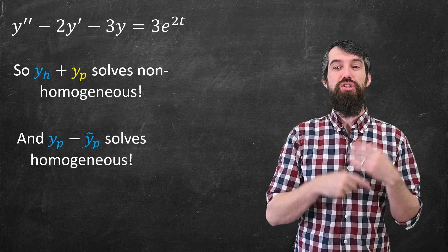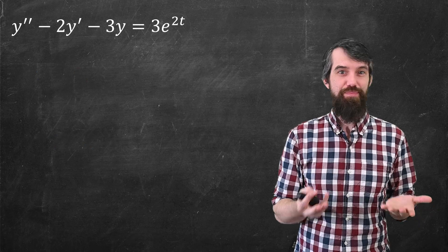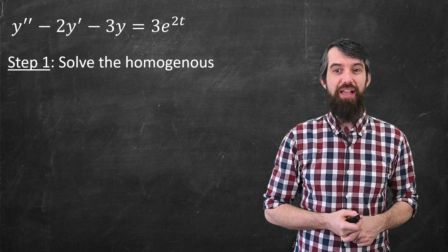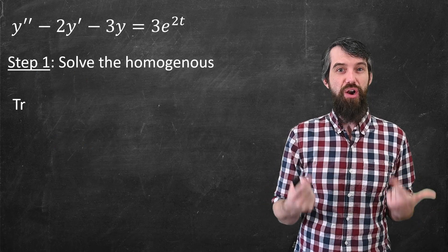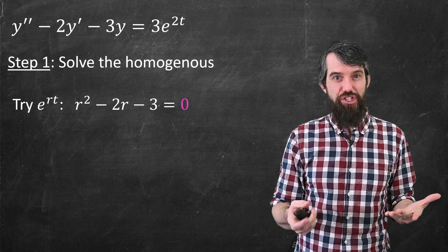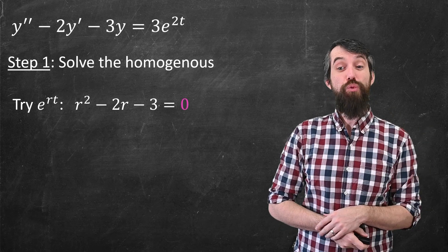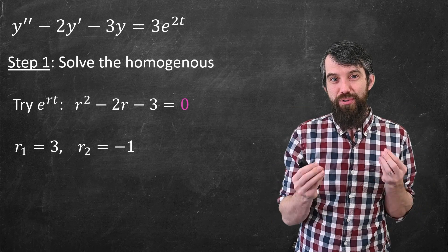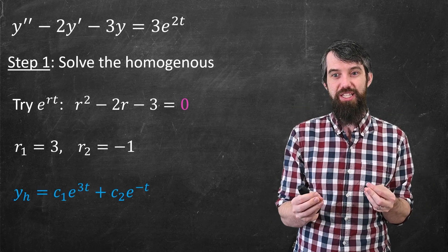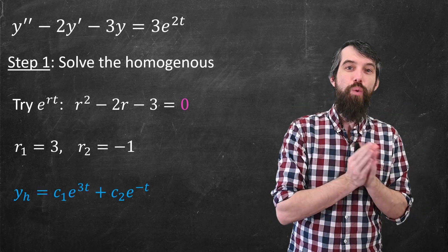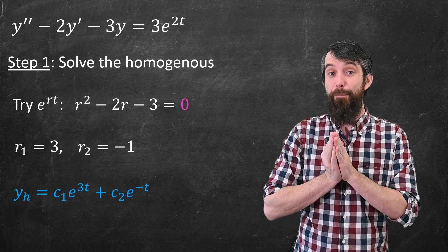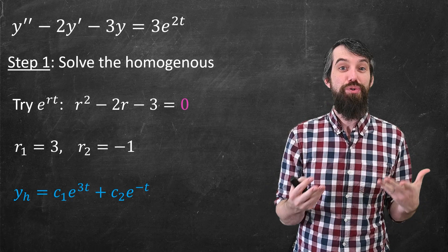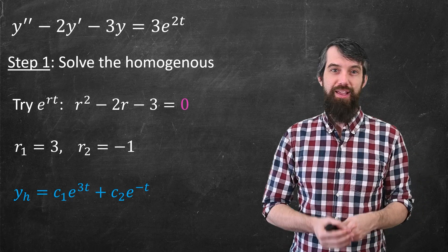Step one: solve the homogeneous. This is something we know how to do. You plug in e to the rt, get the characteristic equation, solve for the roots, and write the general solution to the homogeneous as c1 e to the 3t plus c2 e to the minus t, because you have roots 3 and minus 1.